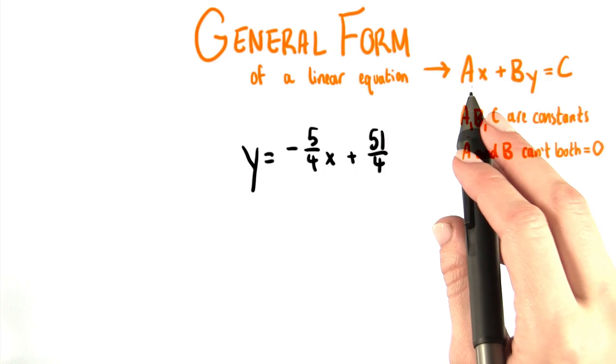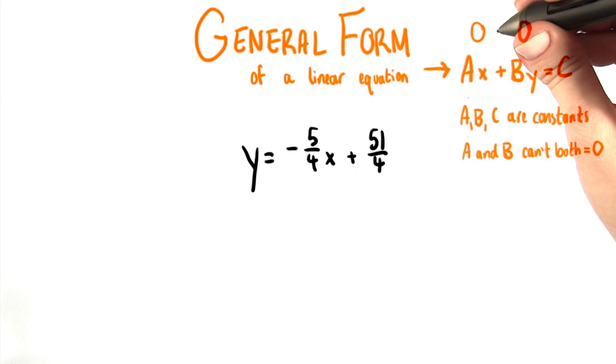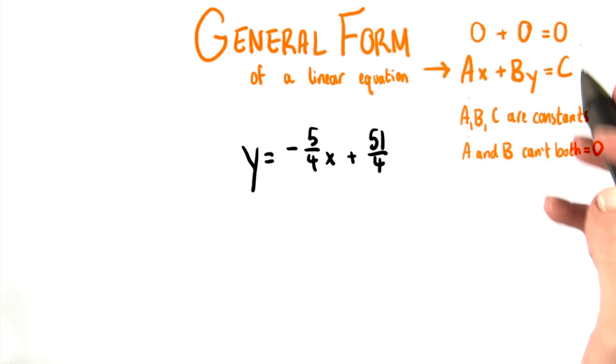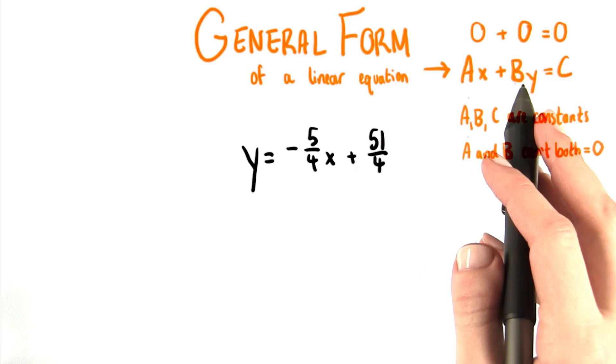If that was the case, of course, this term would be 0, and this term would be 0 as well. So we would just end up with the equation 0 plus 0 equals 0, which may be true, but isn't a linear equation because there are no variables in it.